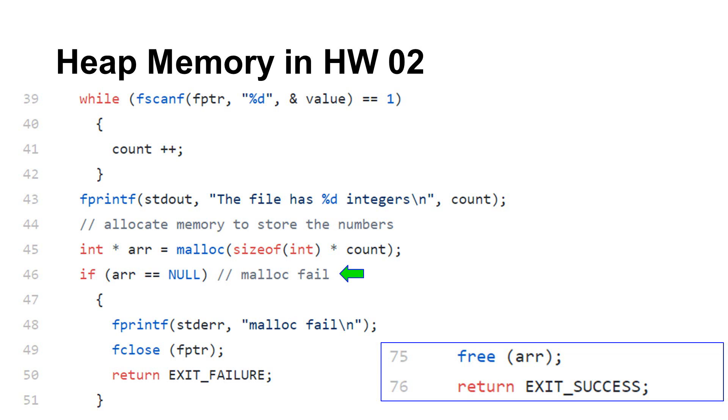This program checks whether malloc succeeds or fails. At line 46, if malloc fails, malloc returns null. Null is a special symbol indicating invalid memory address. Why does malloc fail? Two reasons. First, if the amount of memory to be allocated is too large, malloc may fail. The second reason is when a program leaks memory. Memory leak will shrink the amount of memory available to the program. If a program leaks memory, eventually the program will run out of memory. Do you remember that malloc and free always come in pairs? The program uses free to release memory at line 75.